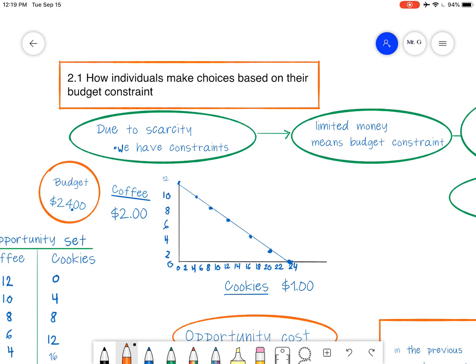So first of all, let's look at this. So due to scarcity, we have constraints. We know that economics is making choices due to scarcity in the world. And we know money, time, etc. are all scarce in our lives. We don't have enough of it. We have to make choices.